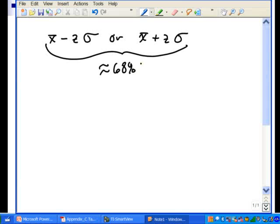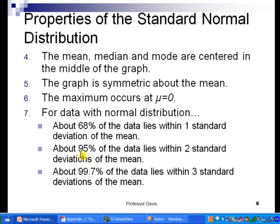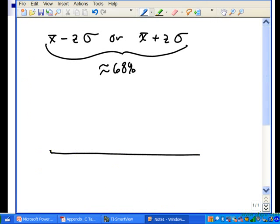Percent of the normal curve would go from minus one standard deviation to plus one standard deviation. We can also say about 95 percent of the data lies within two standard deviations of the mean. Let's take a look at that in terms of a normal curve. Here's our standard normal curve.